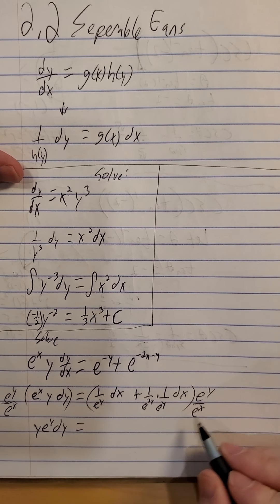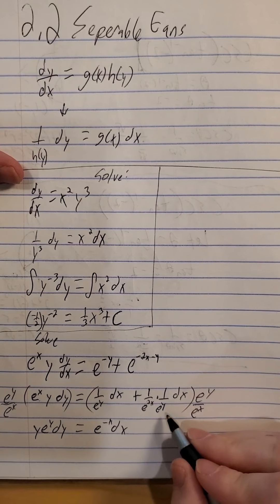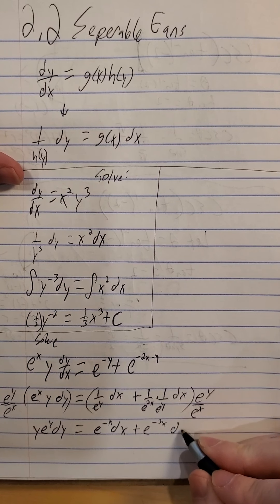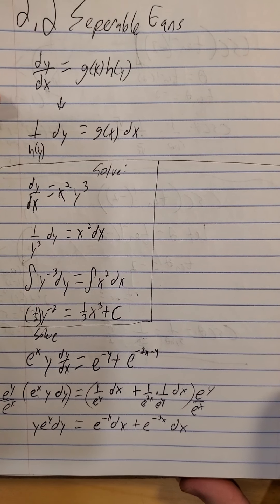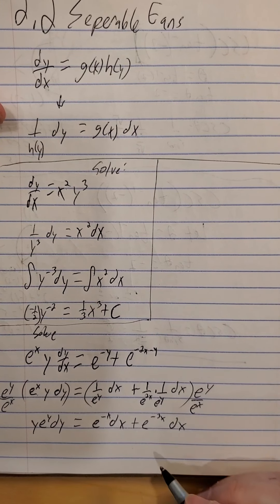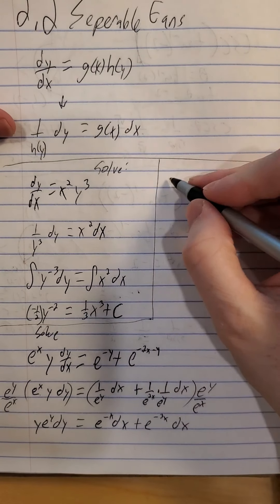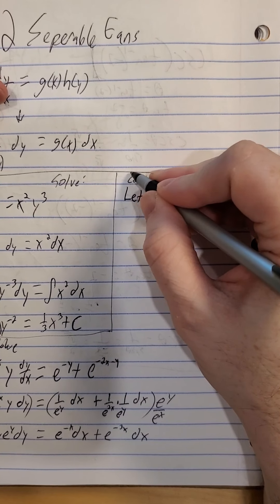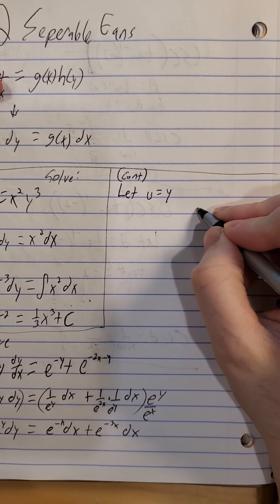If I do it to one side, I of course want to do it to the other side as well. I also want to divide both sides by e^x to get the x's off the left-hand side. So with a little cleanup, the e^x's drop, and we have y·e^y times dy equals — distributing, the e^y's drop — so e^(-x) dx plus e^(-3x) times dx as well. From here we have a little bit of integration by parts to work with.